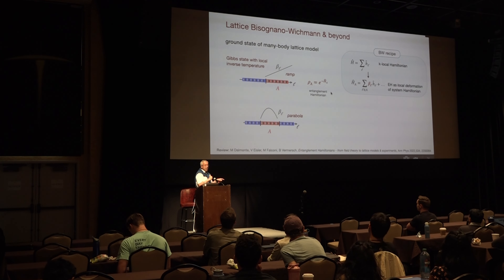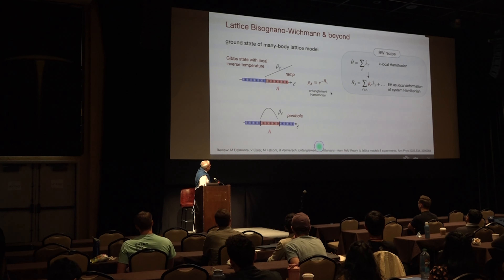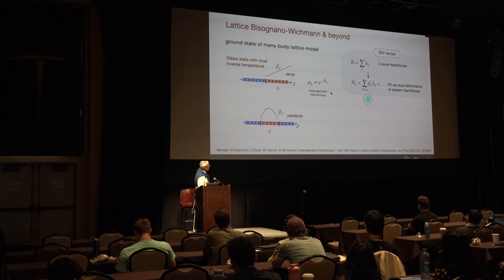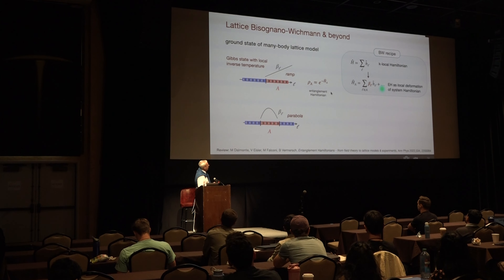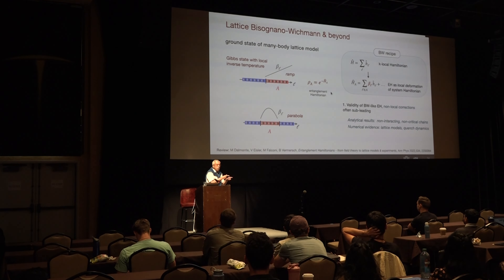So we have a very simple prescription from conformal field theory: the entanglement Hamiltonian is simply the original system Hamiltonian multiplied by a parabola. That's a hands-on idea that we can test, first theoretically with simple 1D calculations, and also try to see that it provides a reasonable ansatz in an experiment. We have to test if there are additional terms — this is not an exact theory for lattices — but to zeroth order this may be true, with maybe corrections that turn out to be too small to see.